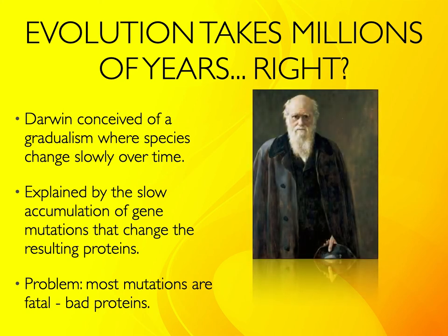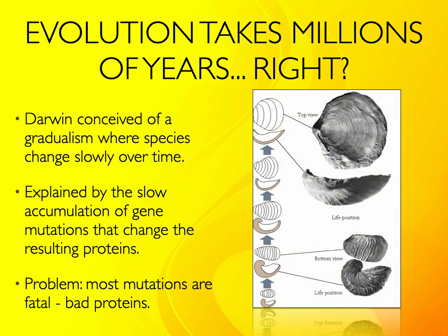One thought about evolution is that it takes millions and millions of years — that's how Darwin conceived it, calling it gradualism: species change very slowly over time. Slow accumulations of genetic mutations and selection pressures result in slightly different proteins, and over millions of years you can have some very different-looking things. We can look at Jurassic coiled oysters that evolved over tens of millions of years into the flat ones we have today — very slow, gradual changes. Evolution can and does take millions of years, but it can also occur pretty fast geologically.